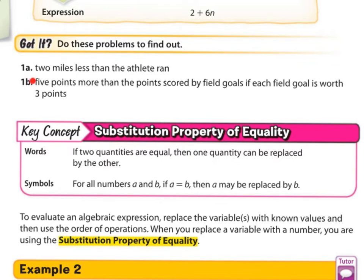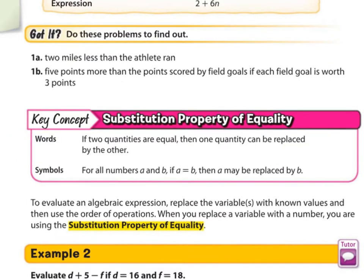If you think you got it, go ahead and try 1A and 1B on your own and then we'll check. Pause the video now and do these two. 1A. 2 miles less than the athlete ran. We don't know how much the athlete ran. So we're going to need a variable. I'm going to go ahead and use A for athlete. So we know that's how much the athlete ran. But we are saying 2 miles less. So we subtract 2.